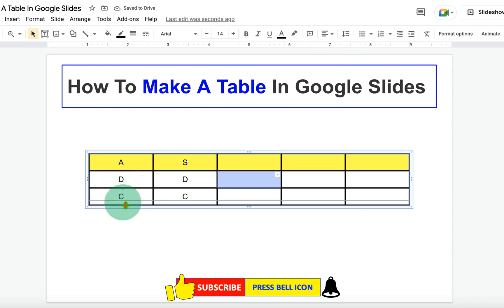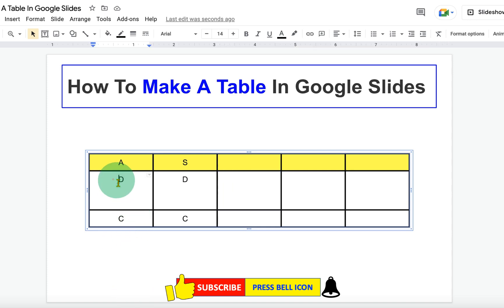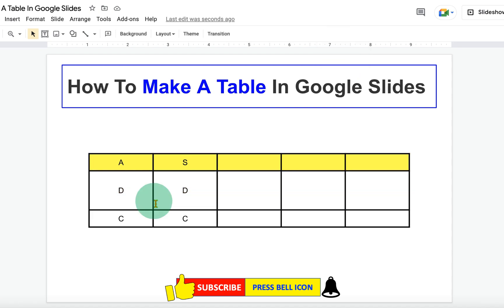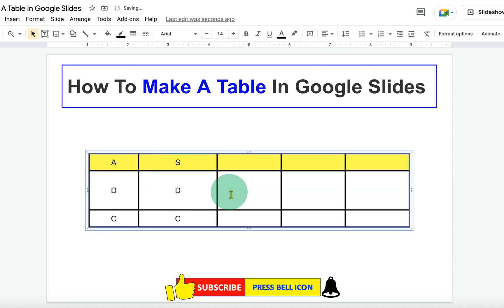If you have a large cell like this and want to center align the text, then just select the cells. Go to the Alignment option and select Middle. You can adjust the size of the cells by dragging the table borders like this.